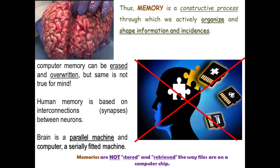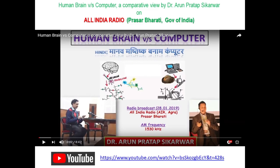Human memory is based on interconnection signaling. There are 86 billion neurons in the brain, and each neuron makes connections like an interwoven jungle where all trees are interwoven — they make synapses. Synapses are the spaces where neurotransmitters pass from one dendrite to another for nerve conduction. The brain is a parallel machine, while a computer is a serially fitted machine — this is an important distinction. Memories are not stored and retrieved the way files are on a computer chip.